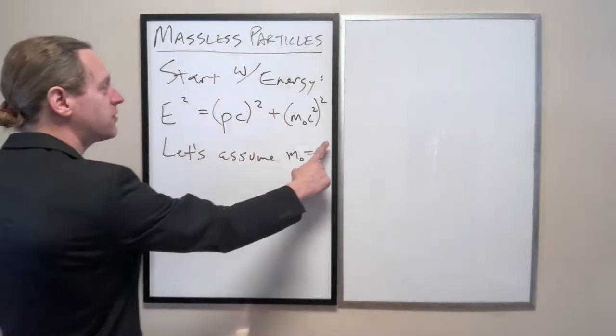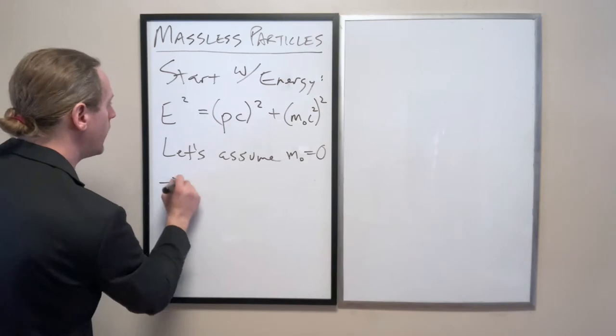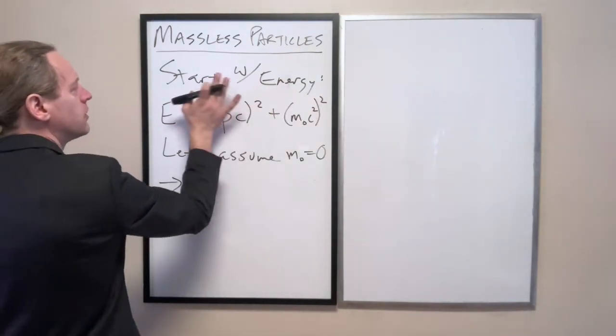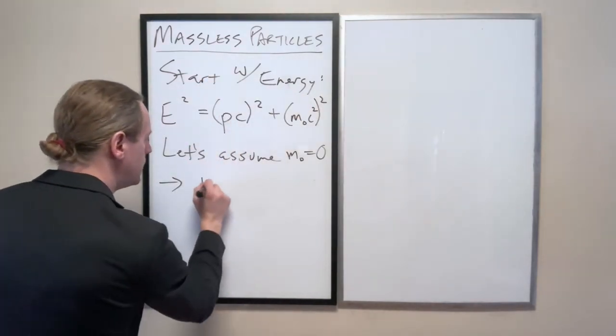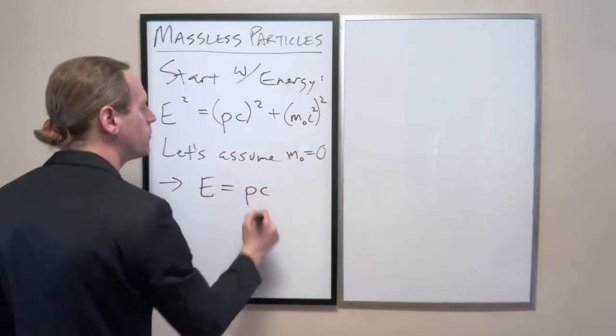So with that said, let's go ahead and take that assumption, M-naught equals zero. So we have now, when that goes away, you can just get rid of those squares. So, E equals PC.